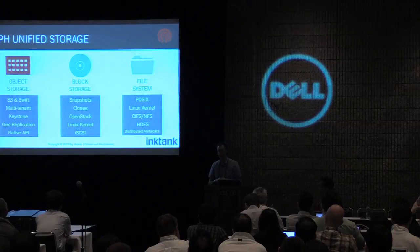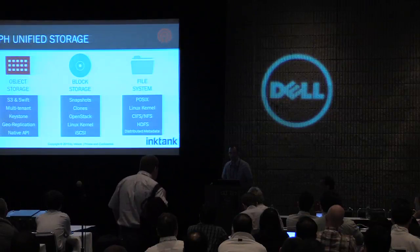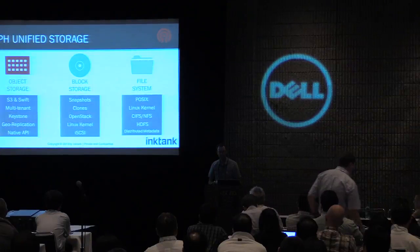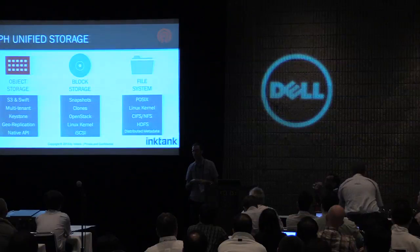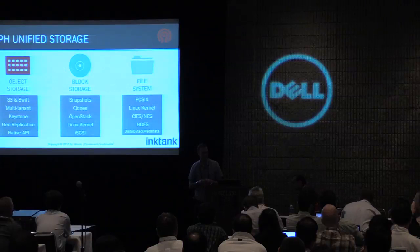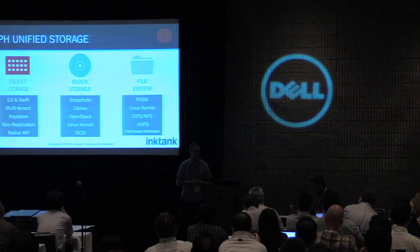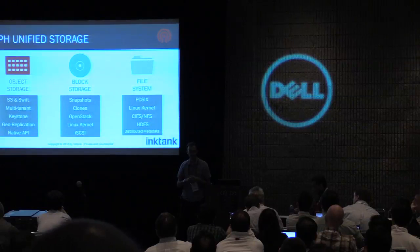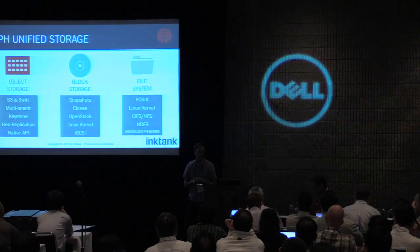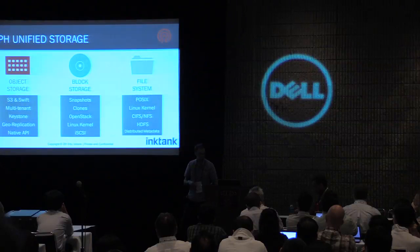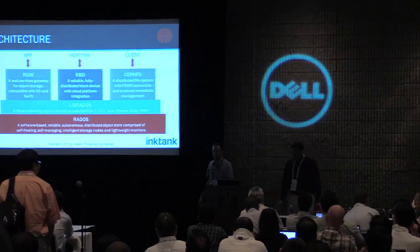The block storage is a sophisticated enterprise-grade block storage system supporting snapshots and cloning, fully integrated into OpenStack through the Cinder API. You can also access it through the Linux kernel, or via iSCSI interfaces. The file system — actually the oldest part of the project — is a distributed POSIX system with some overlap with GlusterFS, though it has a very different architecture. You can access it through the Linux kernel or via traditional protocols like NFS and CIFS.